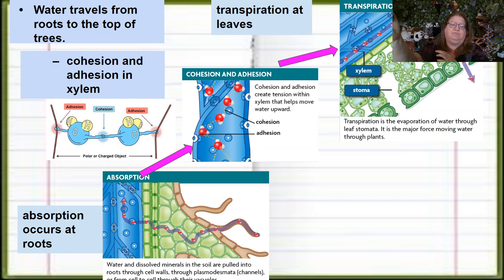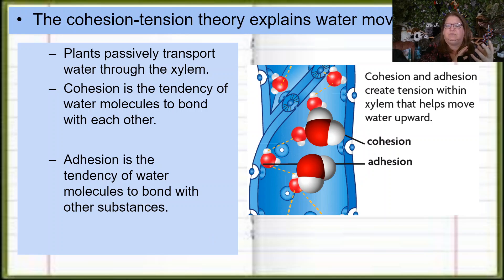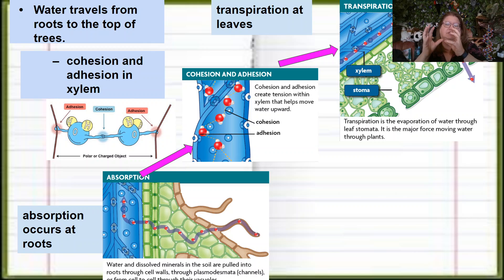It's pretty wild. This does not need any energy except for at the very level of the cells down at the roots, and even that's not actively transporting water - it's just actively transporting the minerals into the cells, and then water simply follows by osmosis. So the cohesion refers to the attraction of water molecules to each other, the tension is the transpiration.